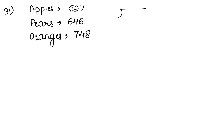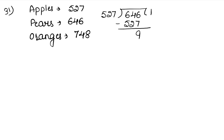Let's apply the division method. We put 527 outside and 646 inside. One time 527 goes. We subtract: 6 minus 7 we borrow, 16 minus 7 is 9; 3 minus 2 is 1; 6 minus 5 is 1. So remainder is 119. Now 527 comes down.